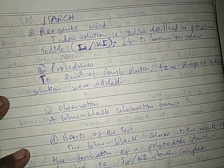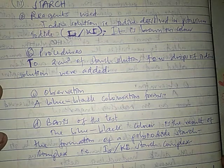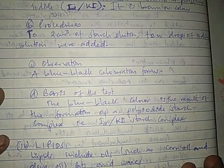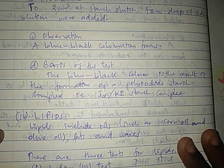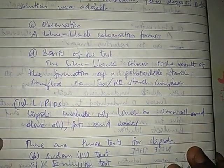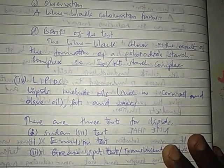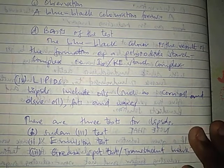Now let's look at the test for starch. The reagent used for starch is iodine solution, sometimes called iodine dissolved in potassium iodide — most of the time it is a potassium iodide solution, and it is brown in color. Procedure: to 2 cm³ of starch solution, add a few drops of iodine solution. Observation: a blue-black color forms. Basis of the test: the blue-black color is the result of the formation of a polyiodide-starch complex. That's all about starch.